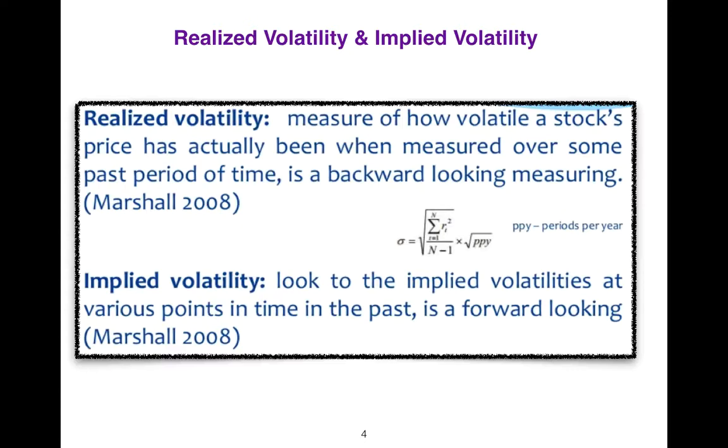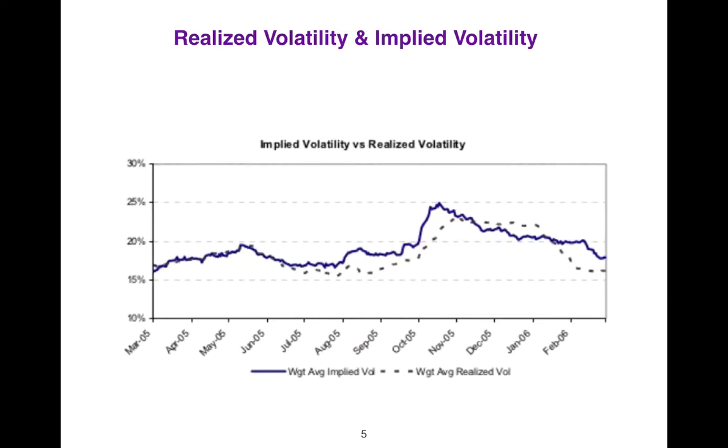There is a difference between implied volatility and realized volatility. Realized volatility is backward looking. Implied volatility looks to the implied values at various points in time past—it's a forward looking measure, so we have a sense of what the future might be.